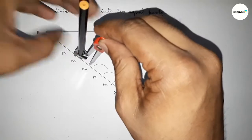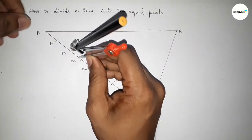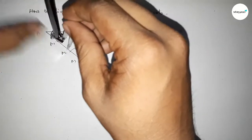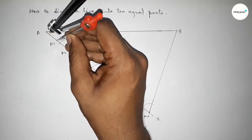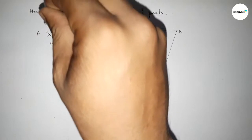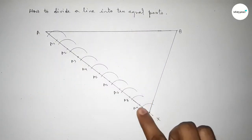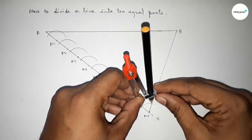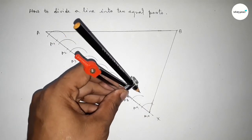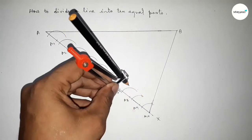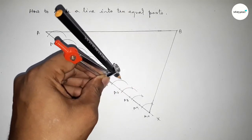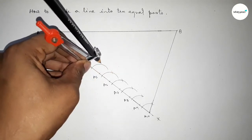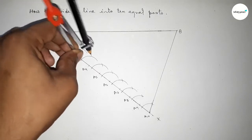Now we have to draw the parallel lines through the remaining points A9, A8, A7 down to A1. Putting the compass and taking the same length, drawing an arc, then taking the distance and marking it. Putting the compass on points A8, A7, A6, A5 down to A1 and cutting the curve the same way.